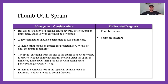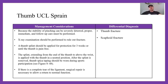Management: X-ray should be performed to rule out fractures such as an avulsion fracture. A thumb splint should be applied for protection for three weeks or until the thumb is pain-free, extending from the end of the thumb to above the wrist to prevent wrist movement from affecting the thumb. If there is a complete tear of the ligament, surgical repair is necessary to allow for normal return to function. Differentially diagnose a thumb fracture and a scaphoid fracture.